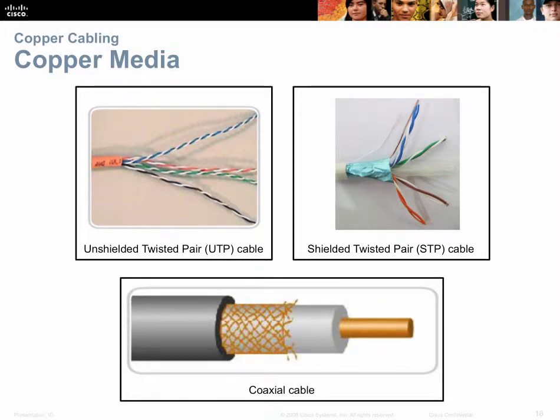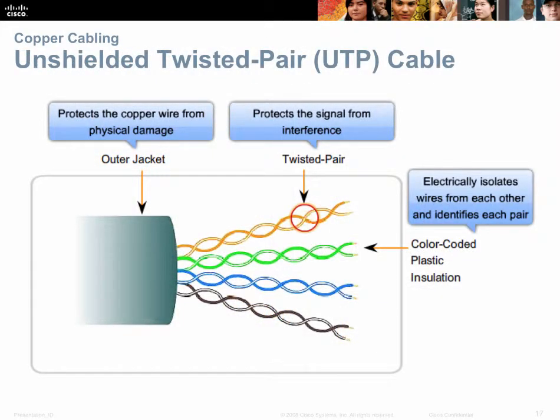For cost-effectiveness, we almost always use UTP. Shielded twisted pair with a foil shield requires a ninth pin to ground the shielding on both ends. Coaxial cable, like the type on your television, also has a shield — either foil or web mesh — which is also grounded. The PVC jacket on the outside of the cable simply provides protection from abrasion; it has nothing to do with signal protection.